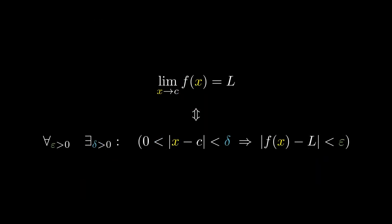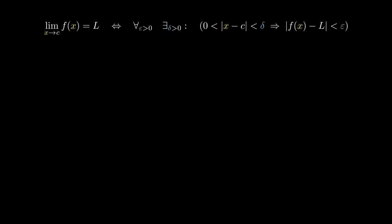In this video, we're going to use this definition and I want to show you a much simpler way to prove limits. Let's consider the limit as x approaches 2 of 3x being equal to 6. The usual technique is to fix some positive epsilon and express the absolute value of 3x minus 6 in terms of the absolute value of x minus 2.